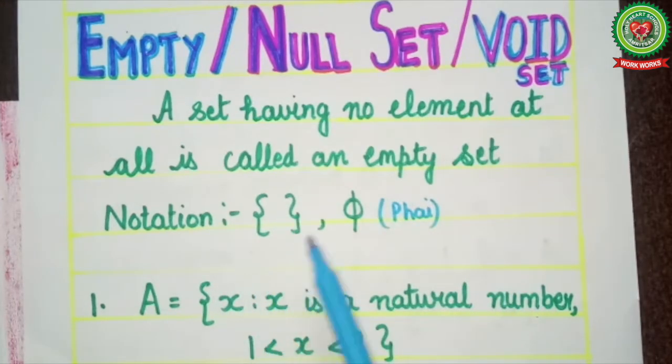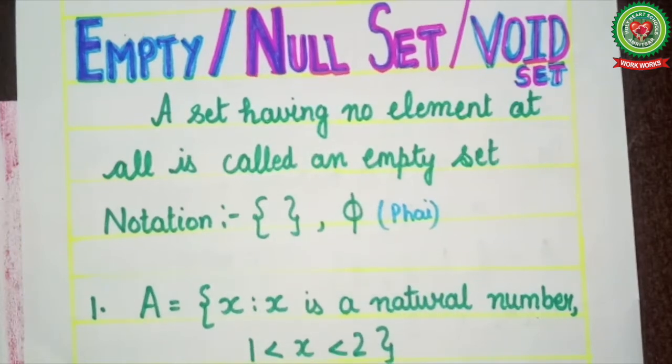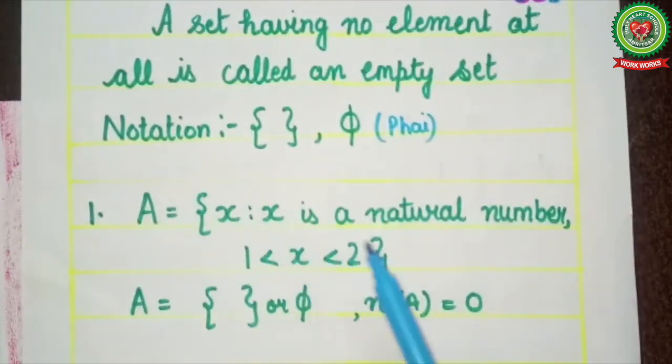A set having no element at all is called an empty set. It is denoted by empty brackets {} or the symbol φ (phi). Let's understand with examples.